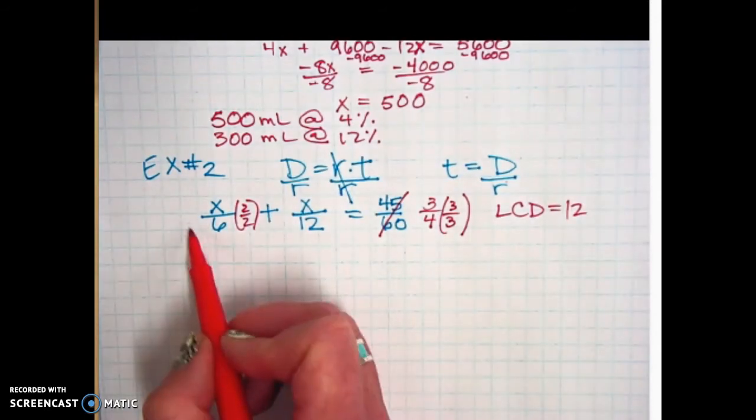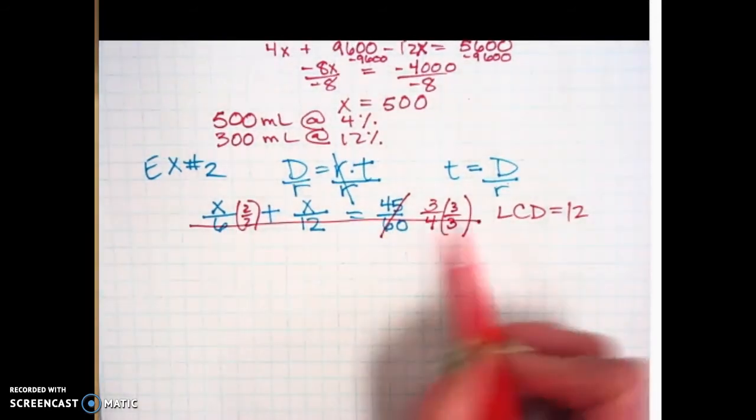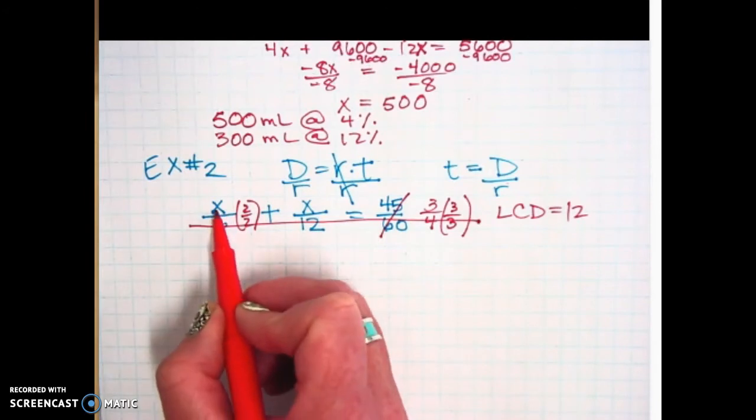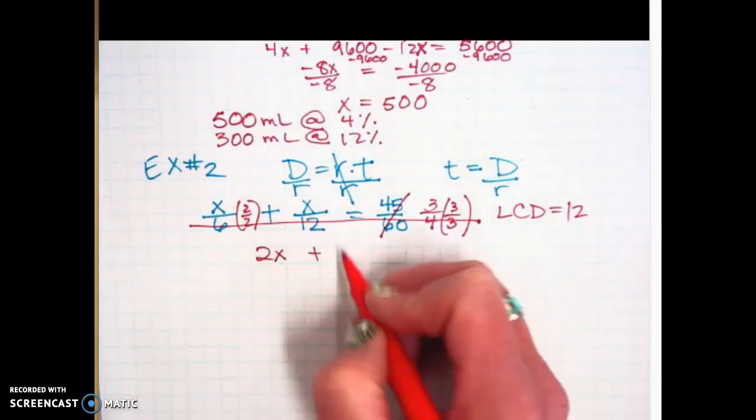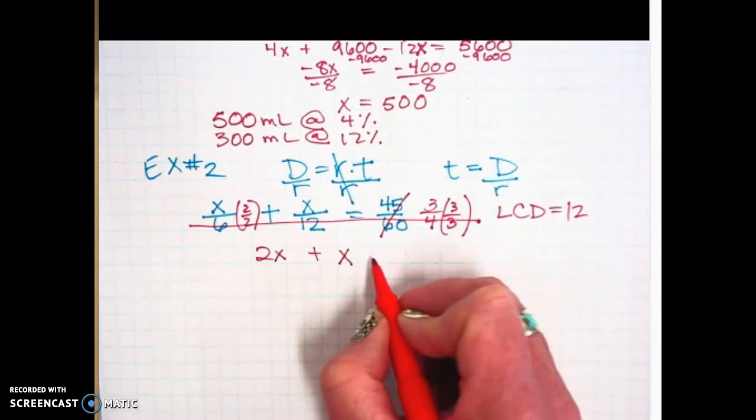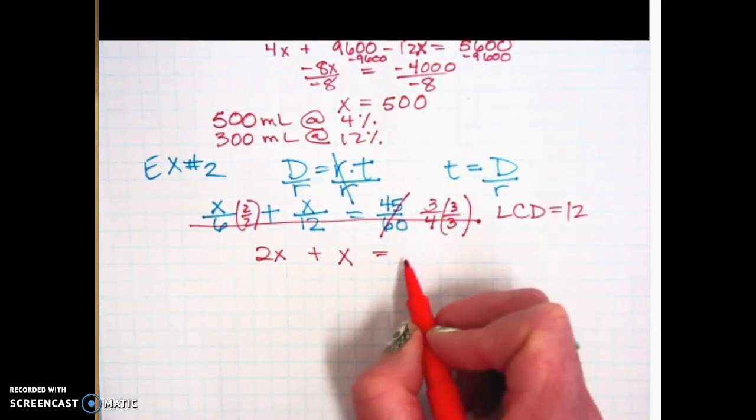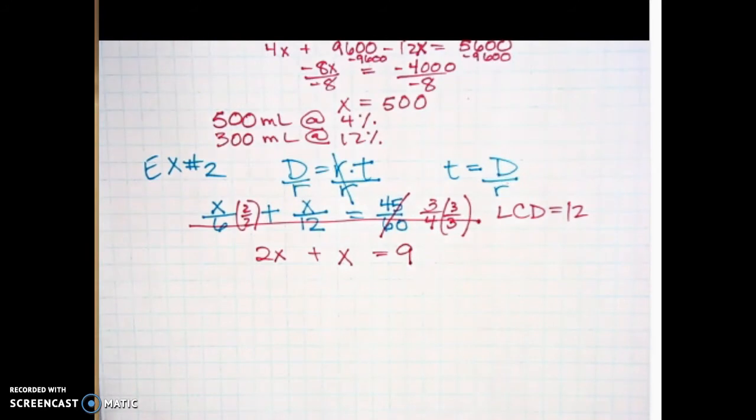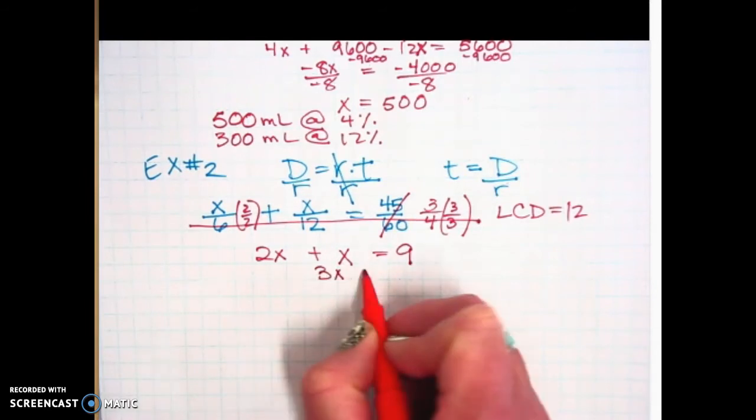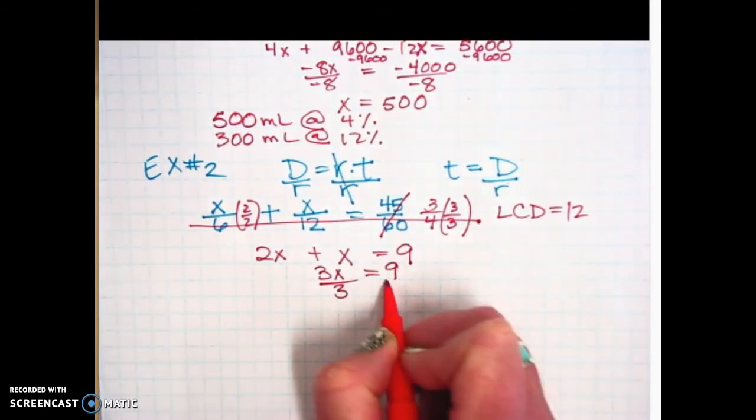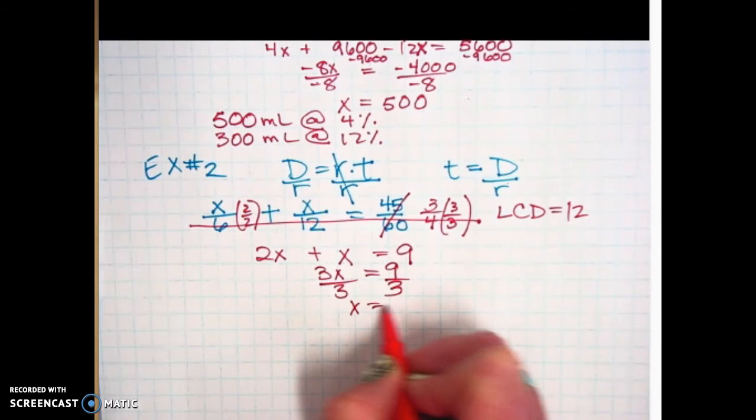When I do that, that's going to cancel out my denominators and I'm left with what's left. X times two is 2x plus x times nothing, which is just one x. That's going to be equal to three times three, which is nine. This went from super complicated to super easy real fast. 2x plus one x is 3x. Divide both sides by three. You get x equals three.